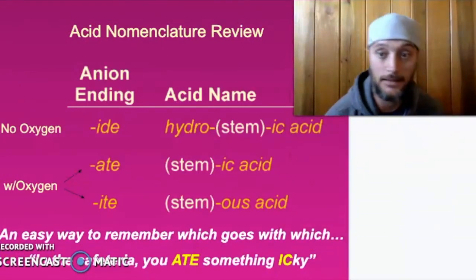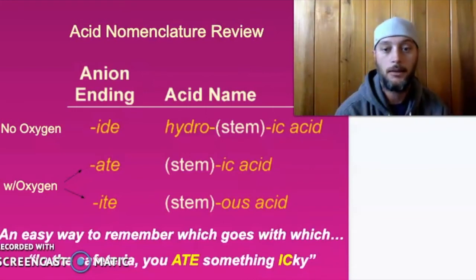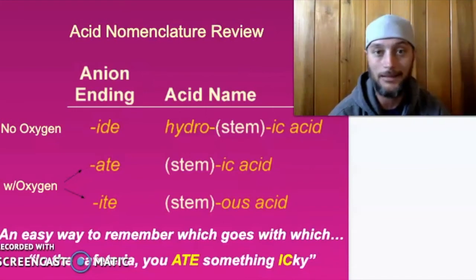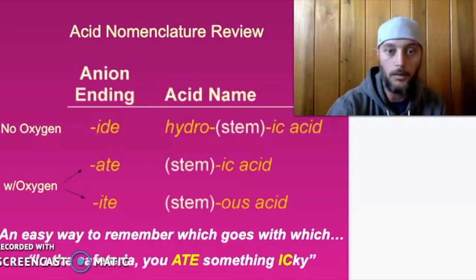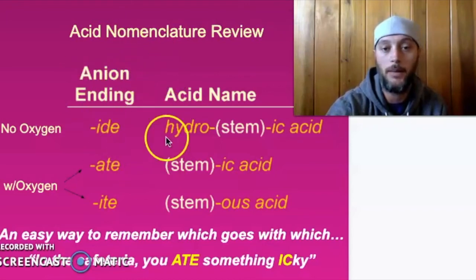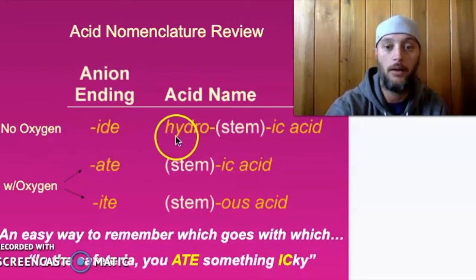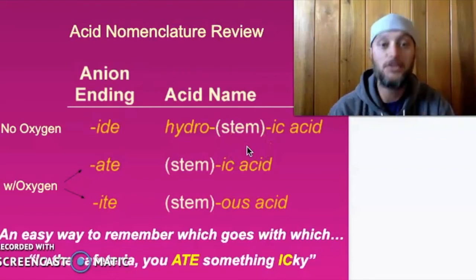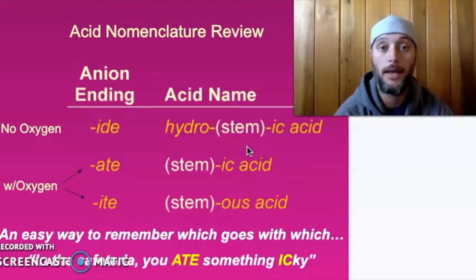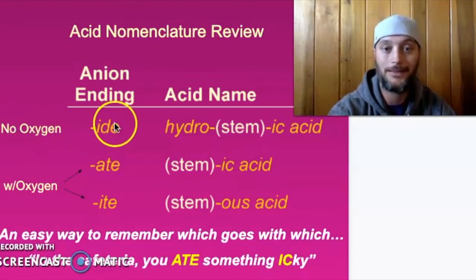Nomenclature — how do we name these acids? If I have HCl, how do I know what to call it? We're going to name acids based upon the anion. If there's no oxygen in the anion, we call it hydro-something-ic acid. So if we had HF, the F is the anion — that's fluoride. There's no oxygen, so that ends in -ide, and I would call that hydrofluoric acid.